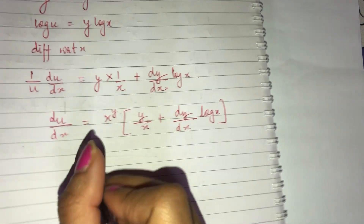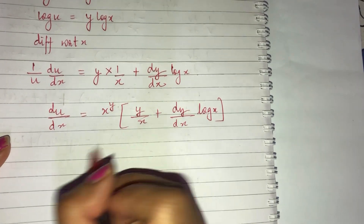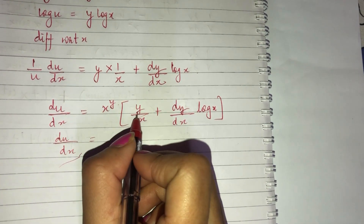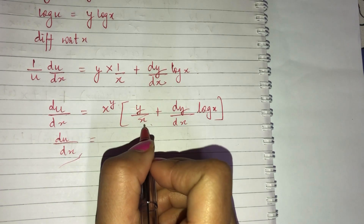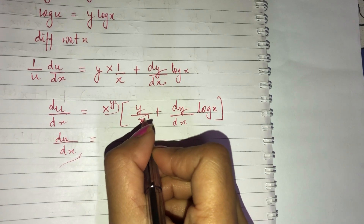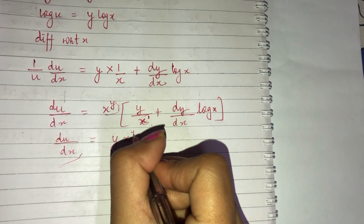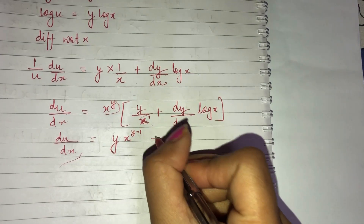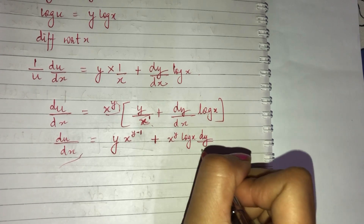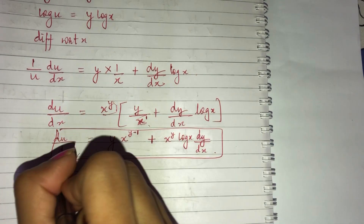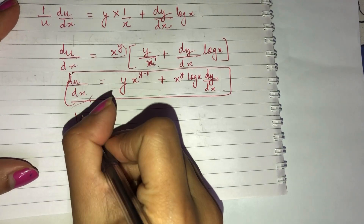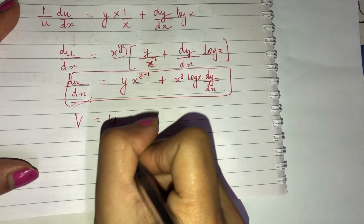Opening the bracket — the base is x, and dividing powers: du/dx = y·x^(y−1) + x^y·log(x)·dy/dx. This is our du/dx expression. Now we know v = y^x, so let's find dv/dx similarly.